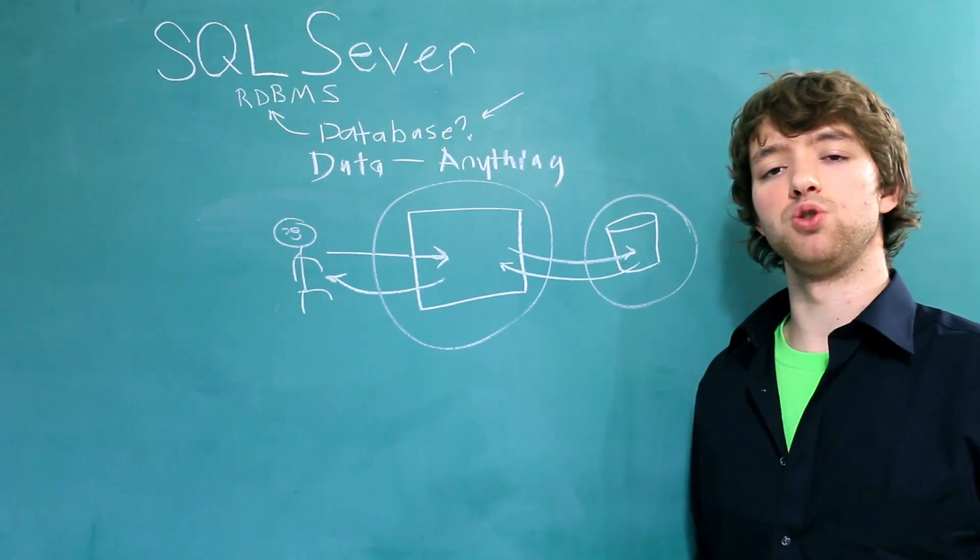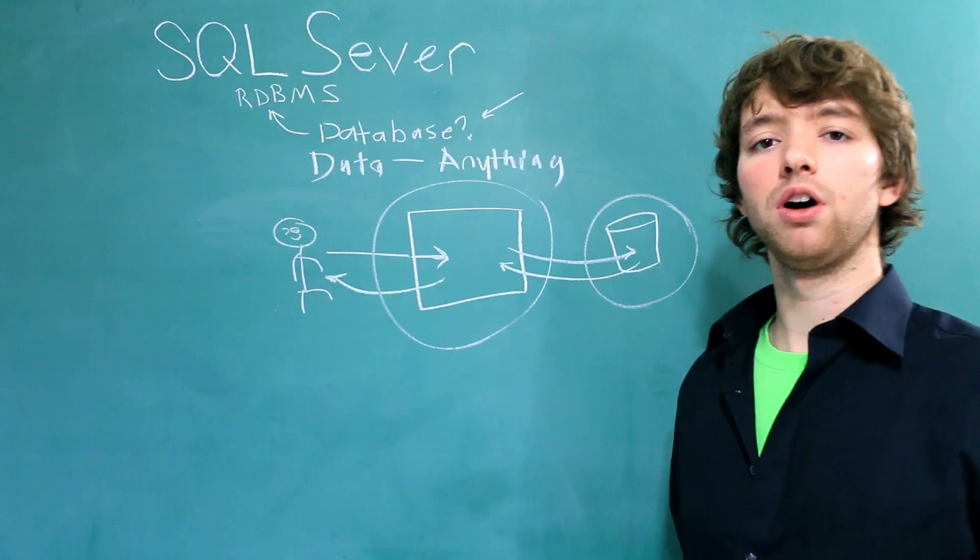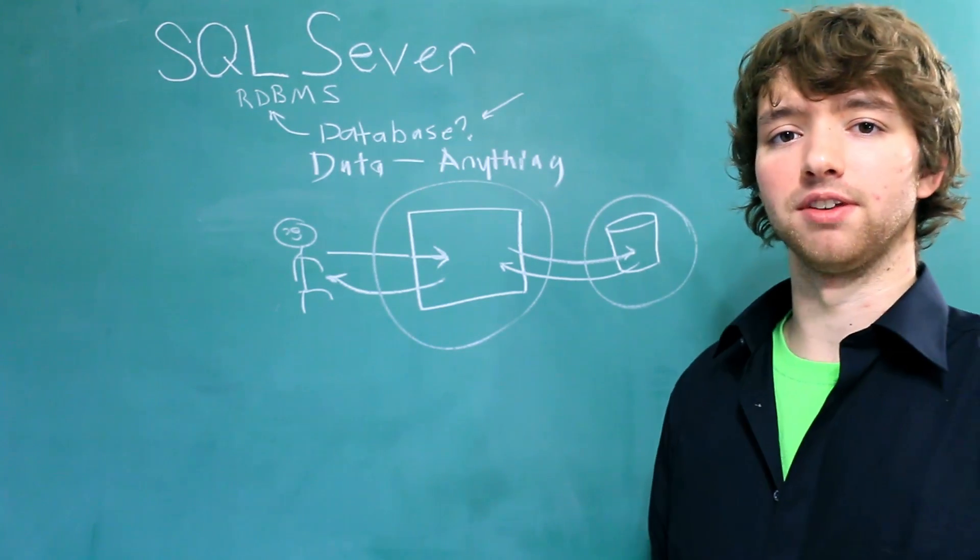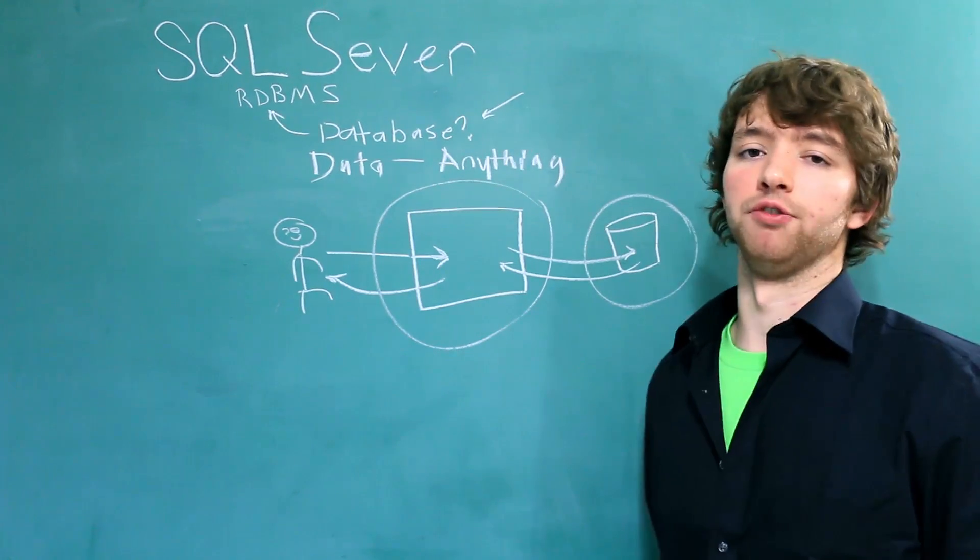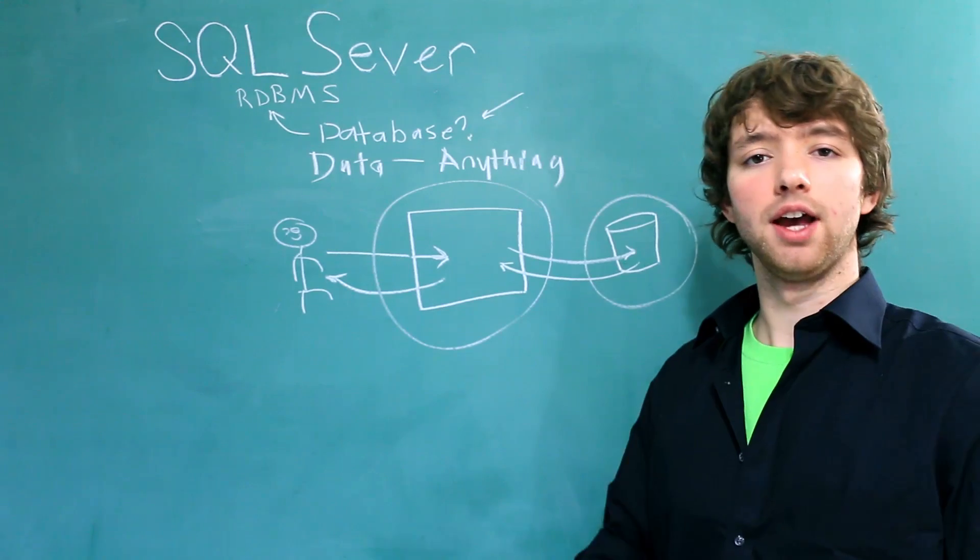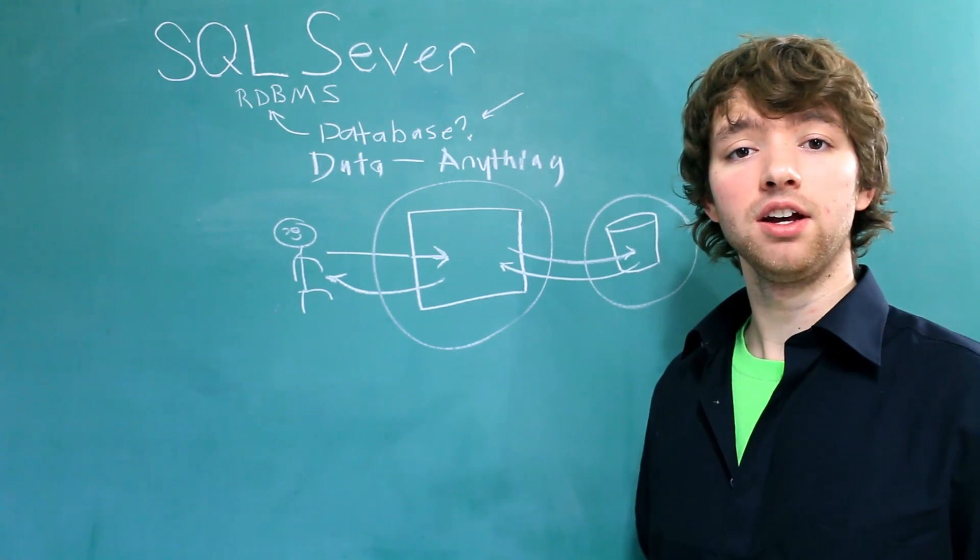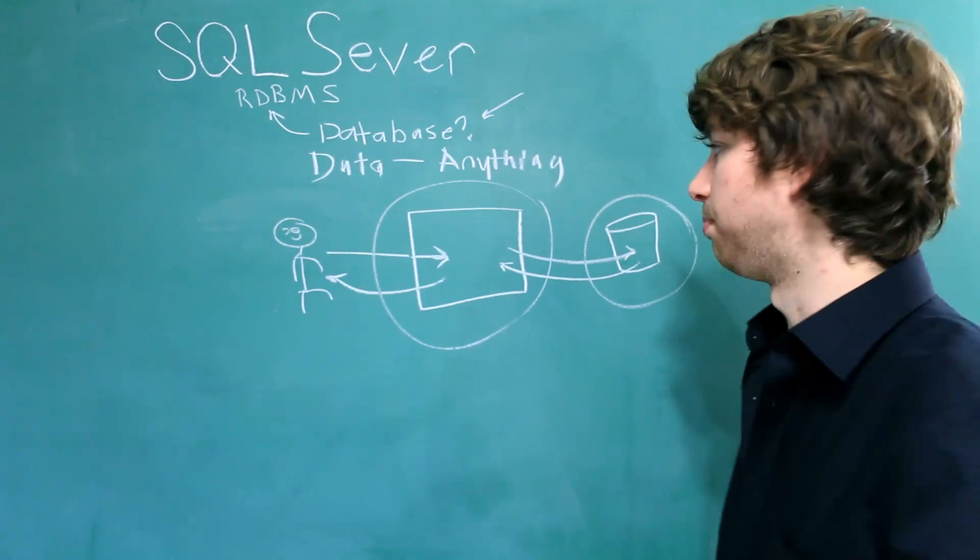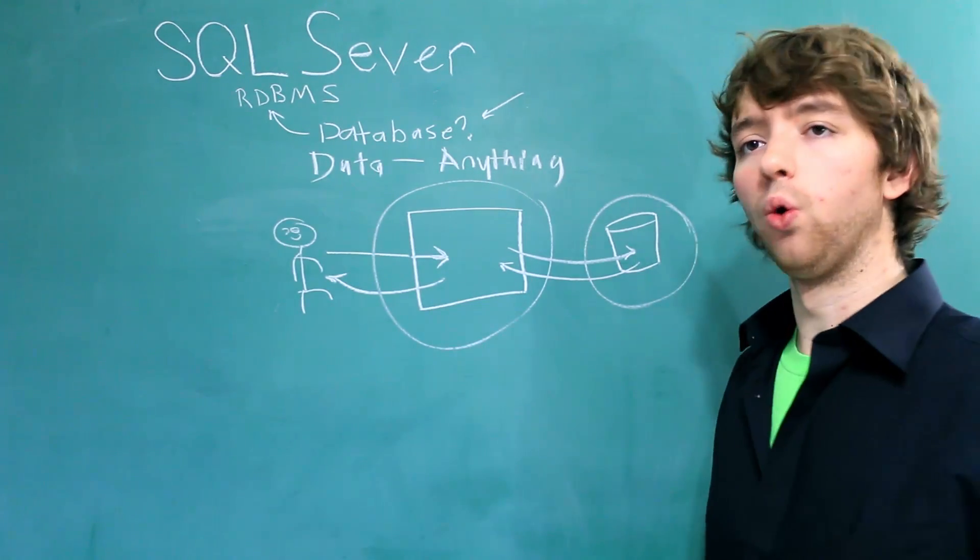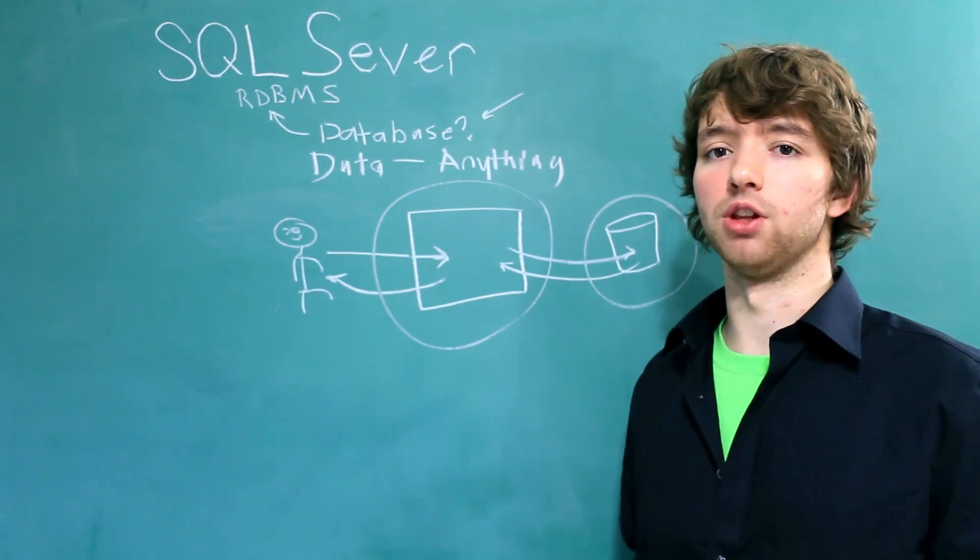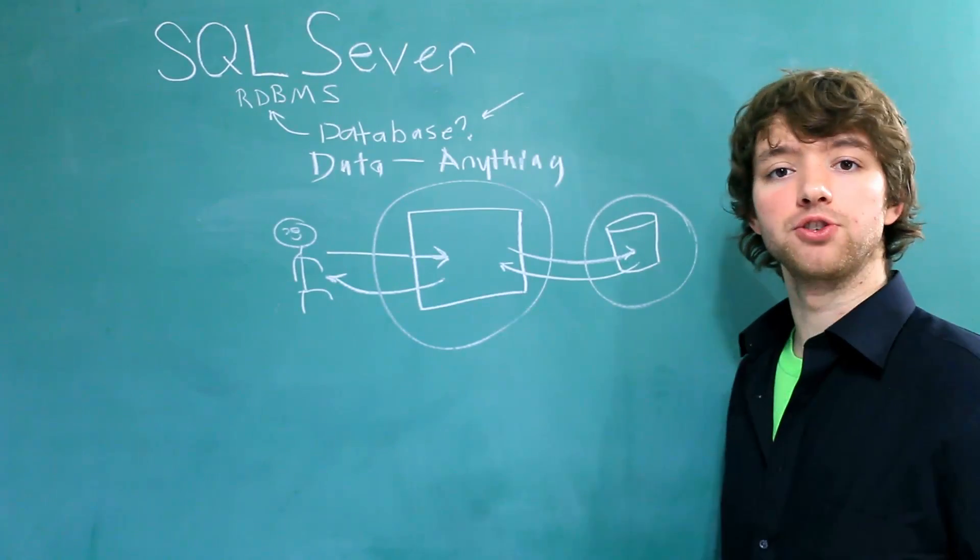So hopefully that gives you a pretty good summary of what a database is. Now as we go on, obviously we're going to get a little bit more specific, but this is just a good overview. You can think of a database as something that stores a ton of information. Then we can analyze that data, and we can use that database to power an application, or to just make our lives a lot easier with storing information.